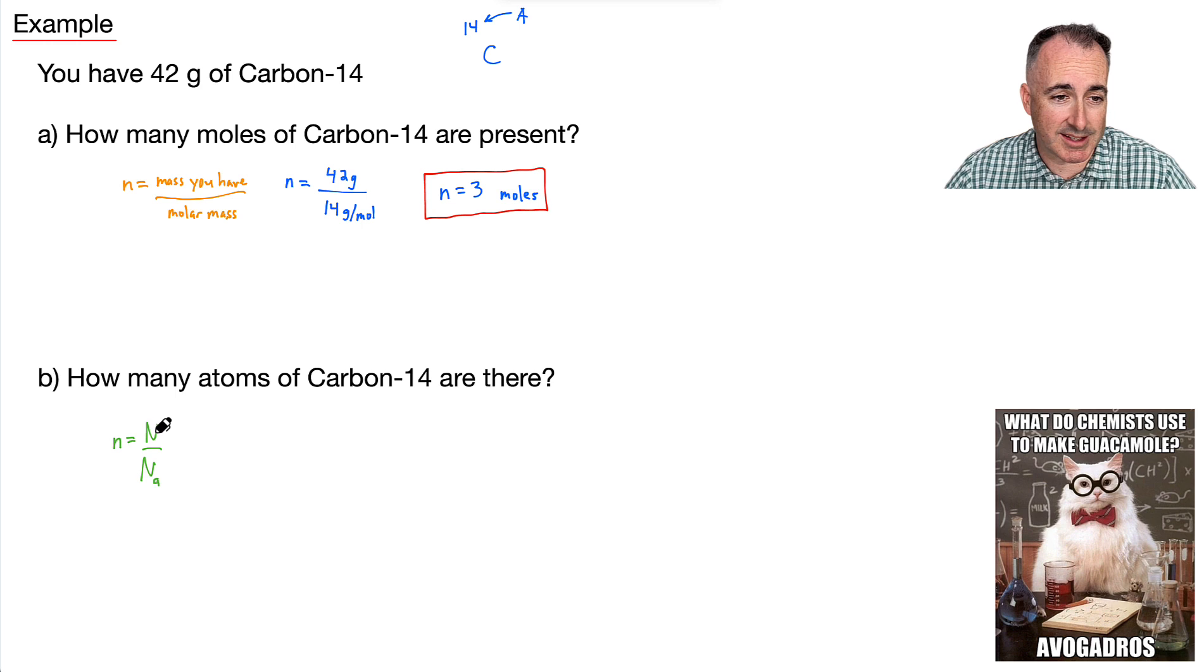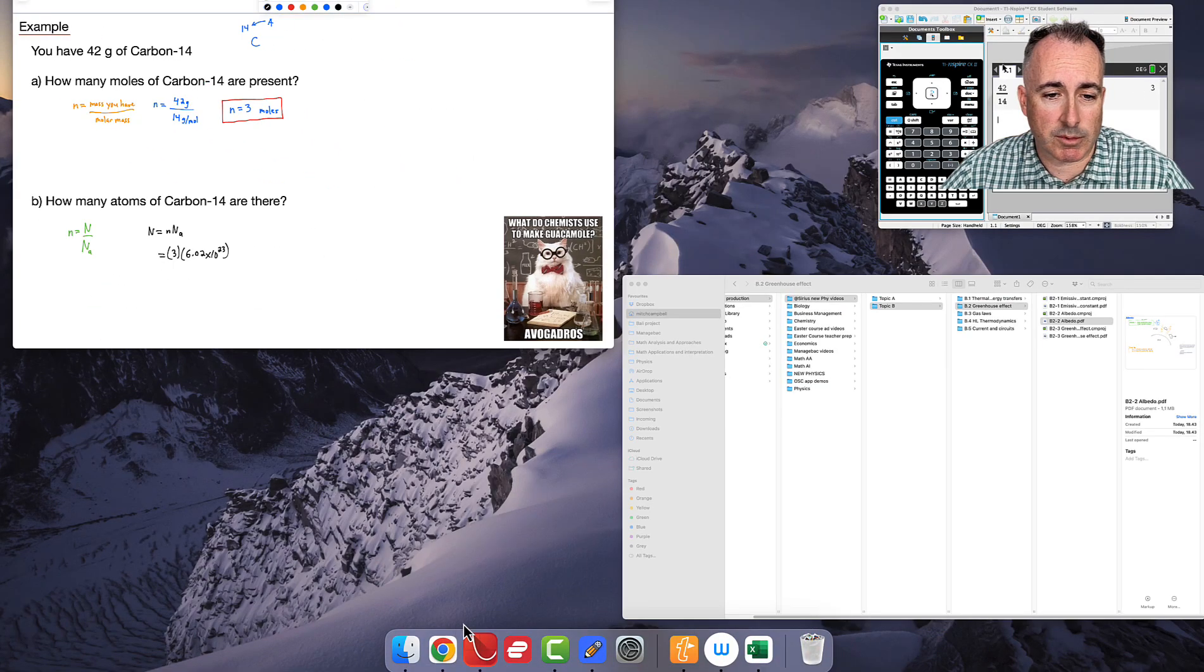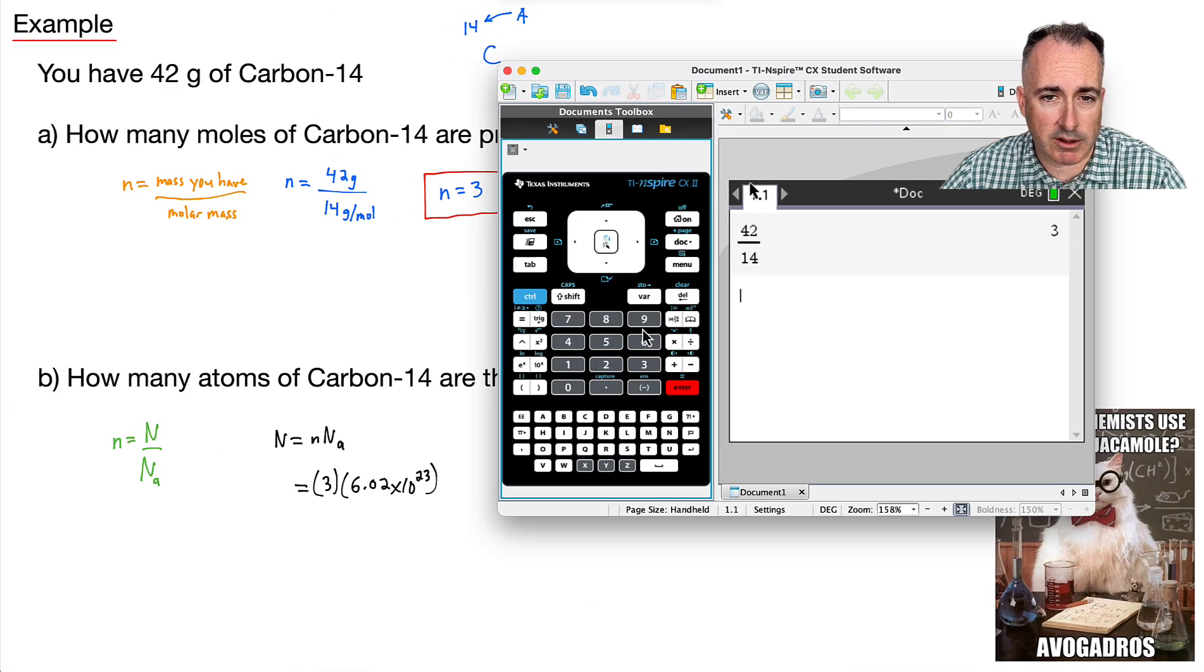So we want to get this capital N by itself. Well, that capital N by itself is just going to be lowercase n times NA. So it's going to be like this. Do I know these numbers? I sure do. n is 3 moles. I know that because I just found it. Avogadro's number is 6.02 times 10 to the 23. I just need to multiply these two numbers together. So I'll use my calculator. So I have this number times 6.02 times 10 to the 23.